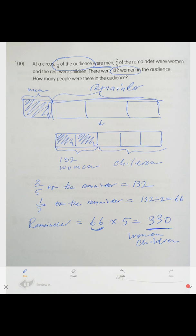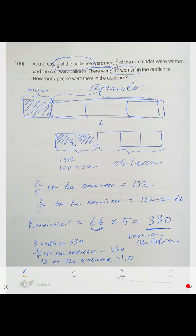The remainder is 330, which is three-fourths of the audience. So one-fourth of the audience is 330 divided by 3, which is 110. The total number of people is 110 times 4, which is 440. There were 440 people in the audience.